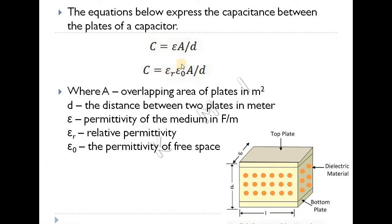The working principle formula is: C equals epsilon times A divided by D, where epsilon equals epsilon-R times epsilon-0.